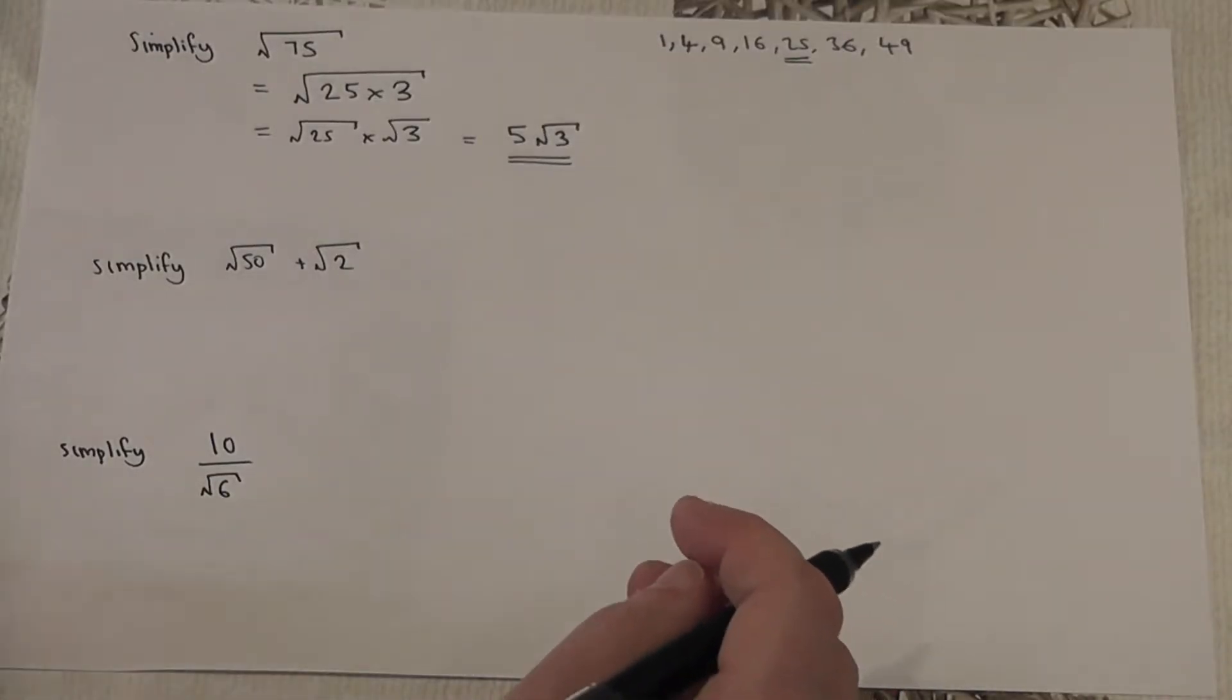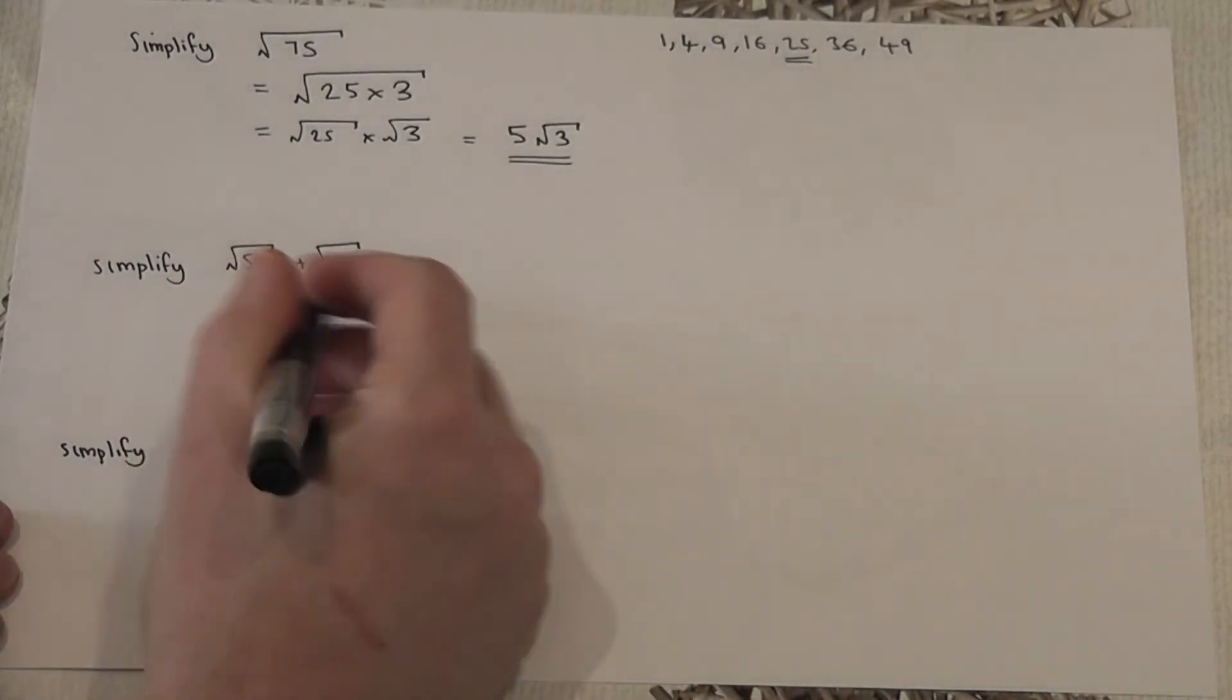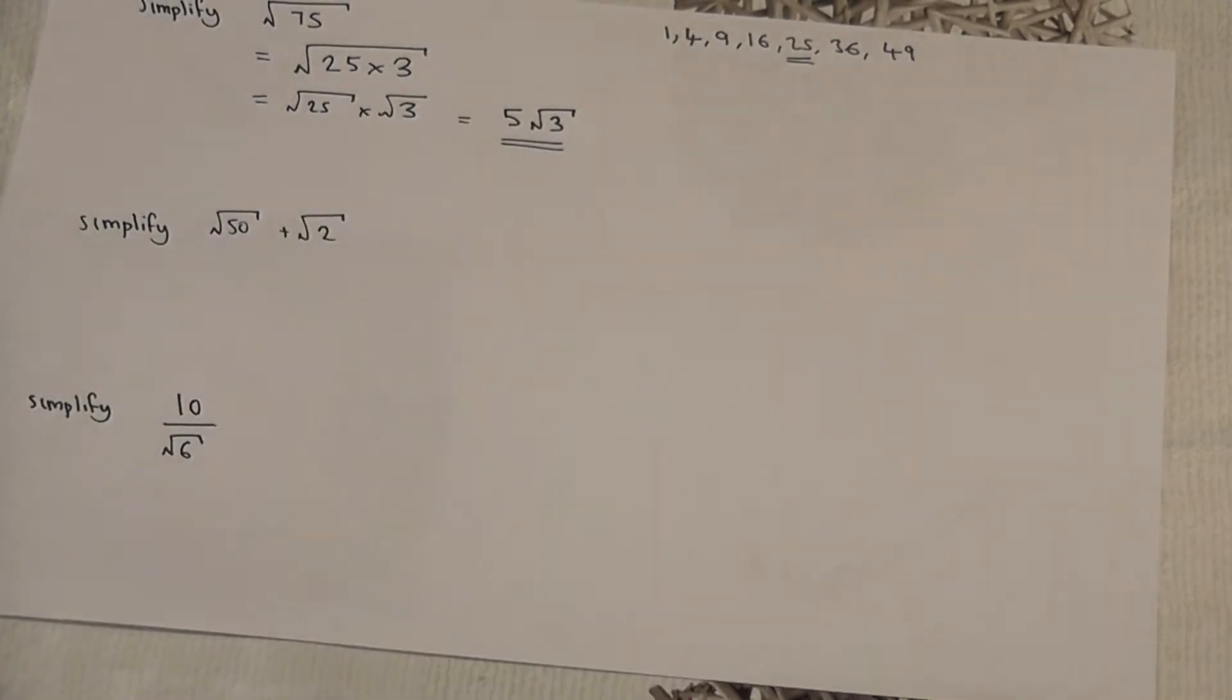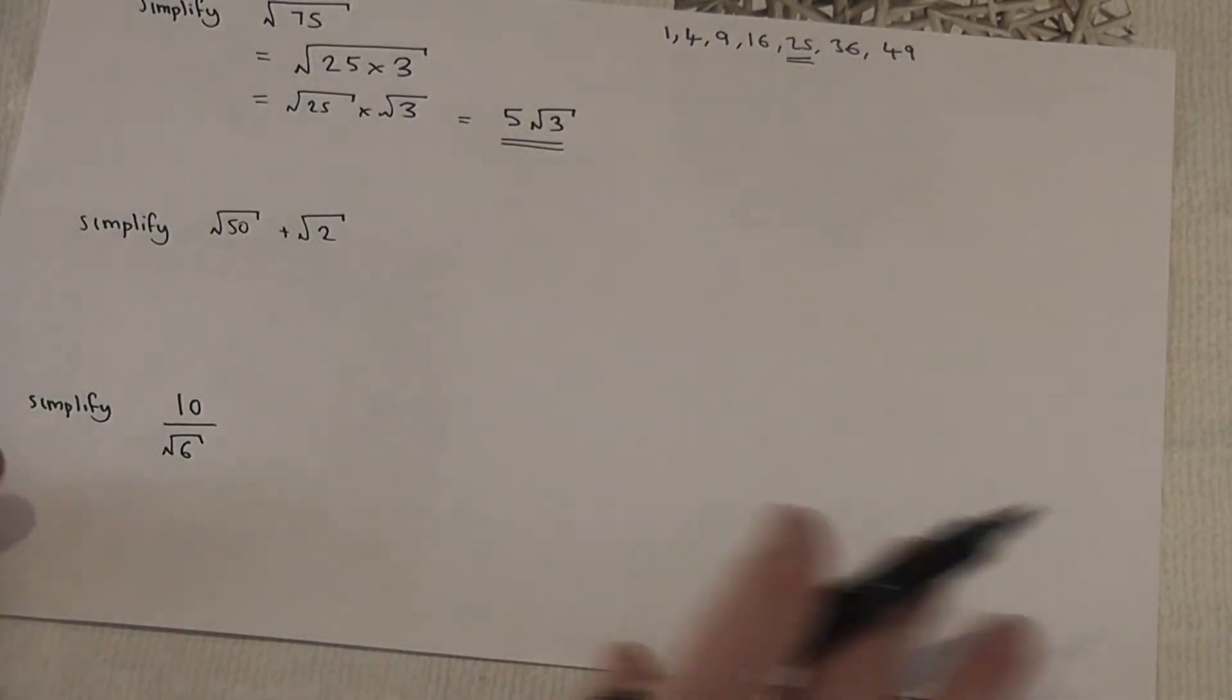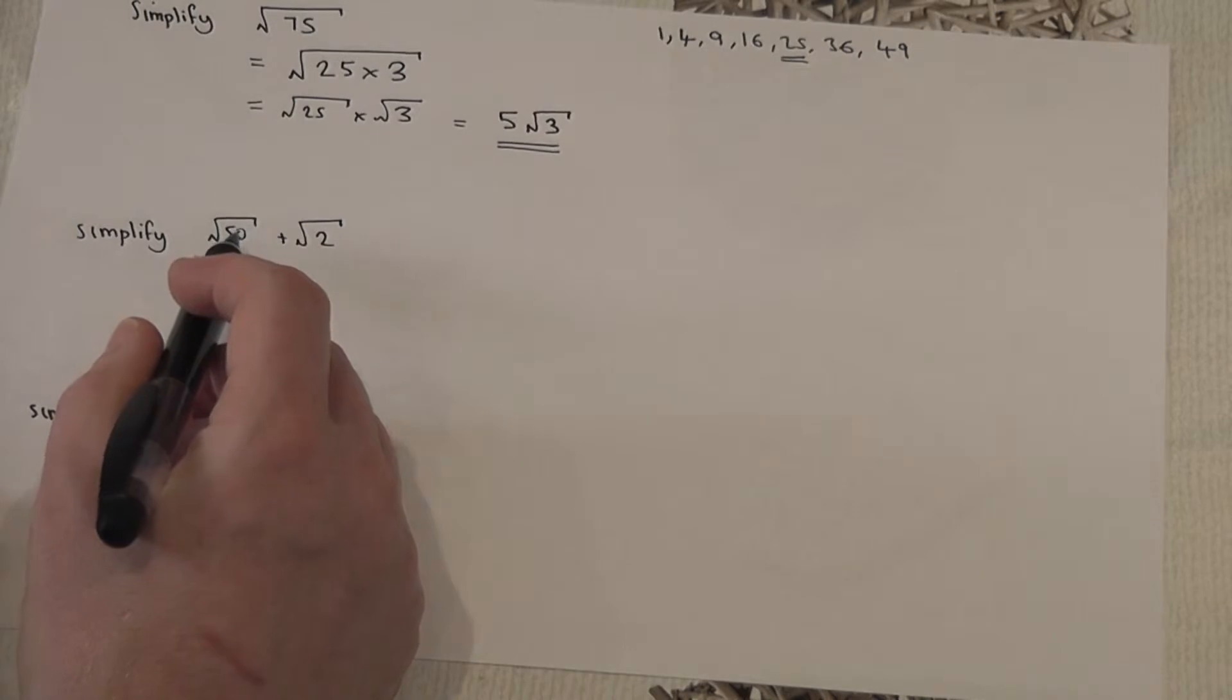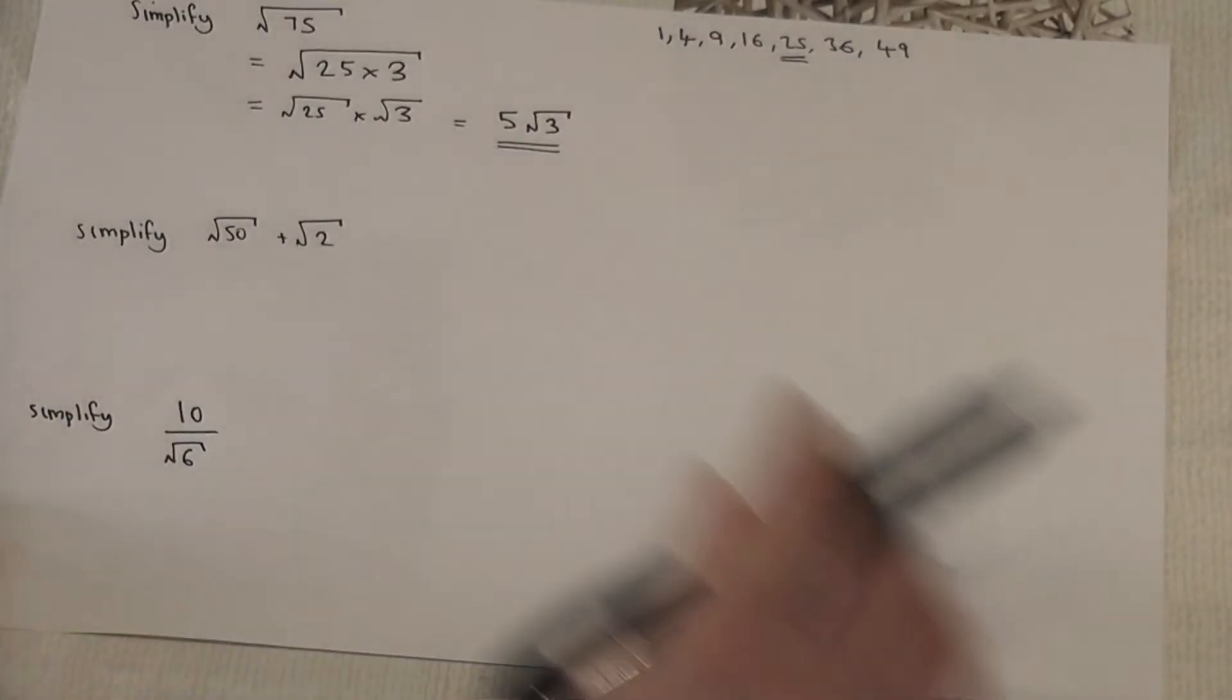Now a context of this is when you're asked to add together two surds. This answer is not root 52. To do this, I need to simplify root 50 and also root two if possible.